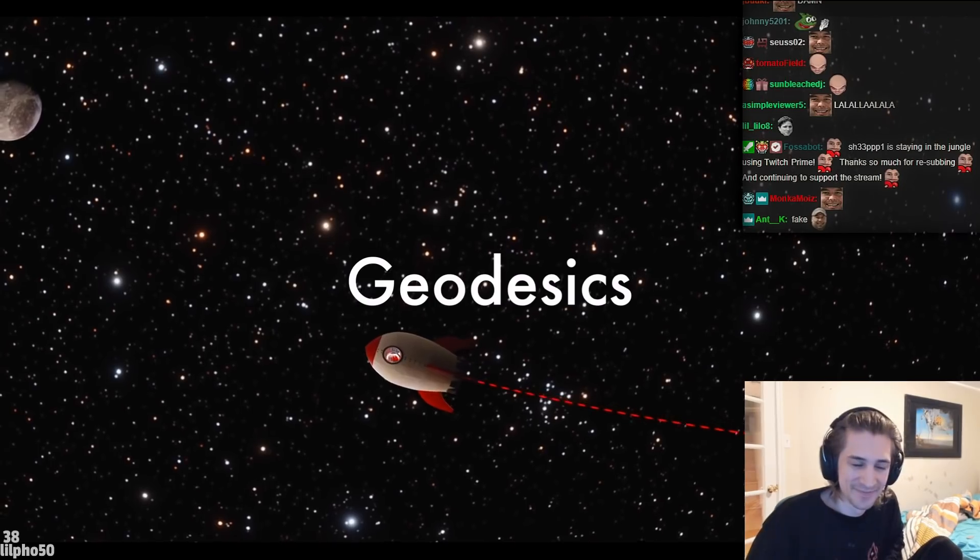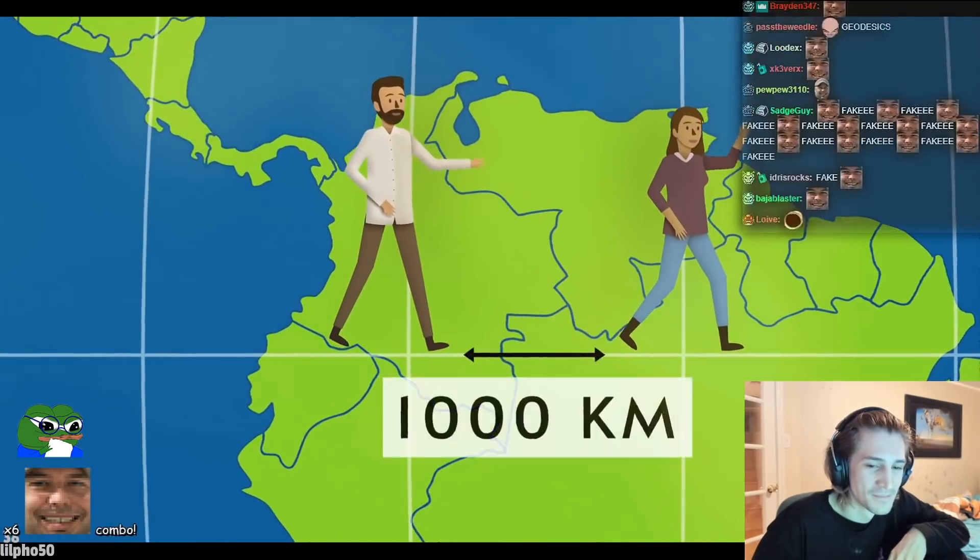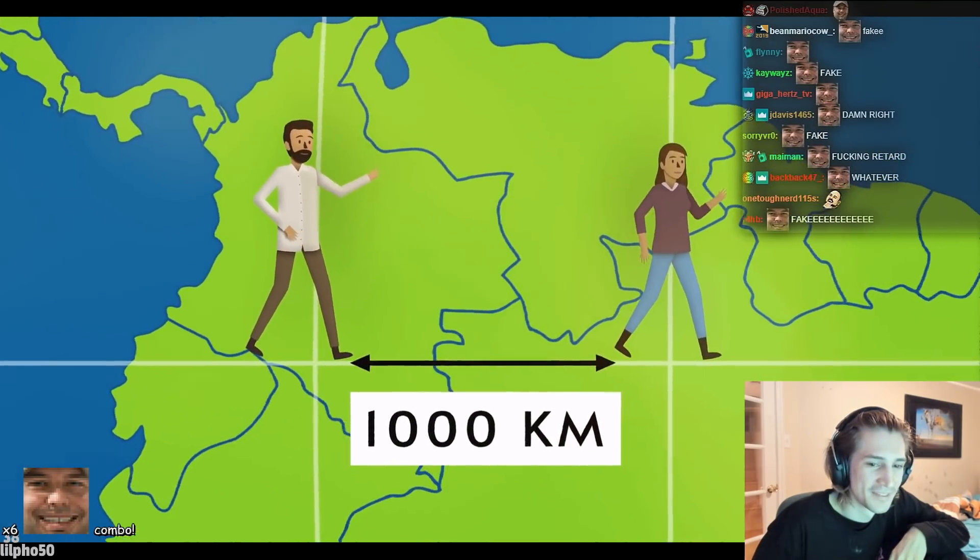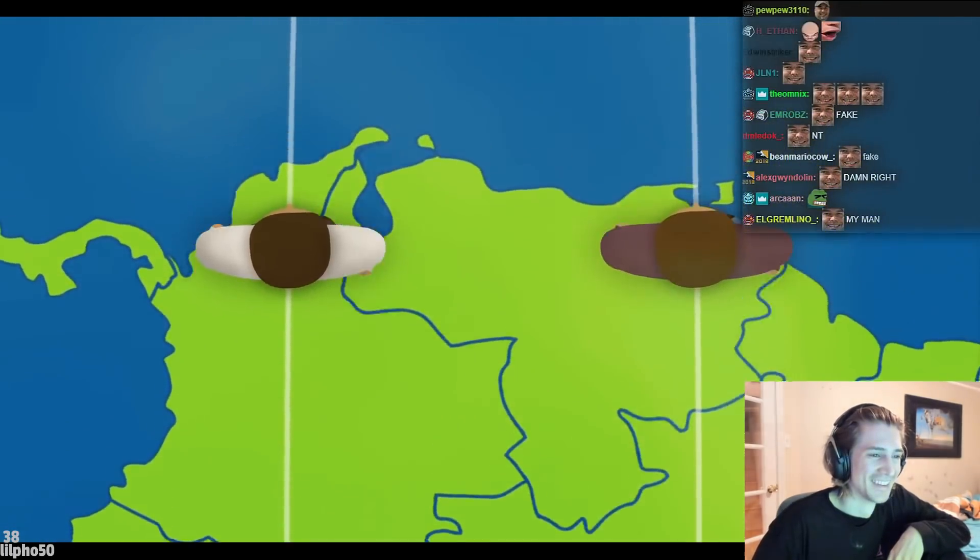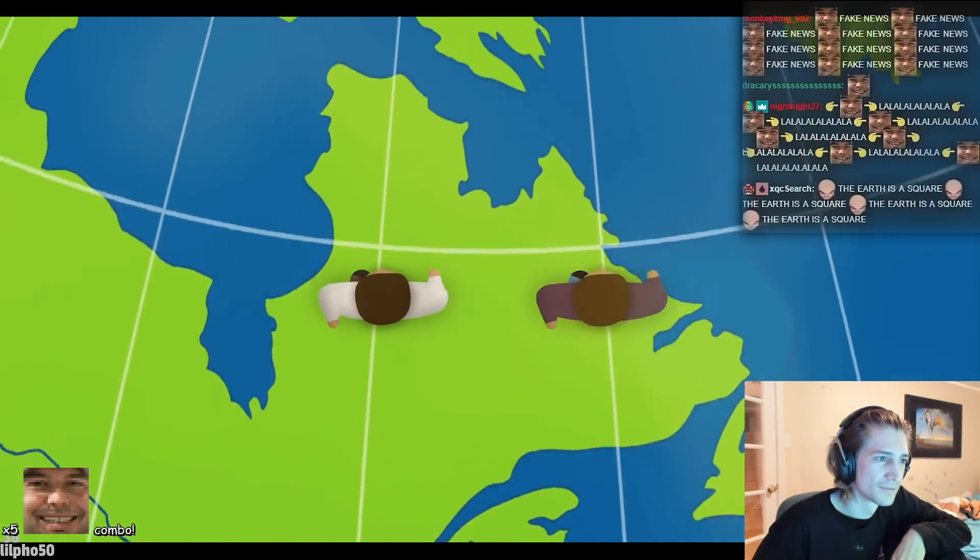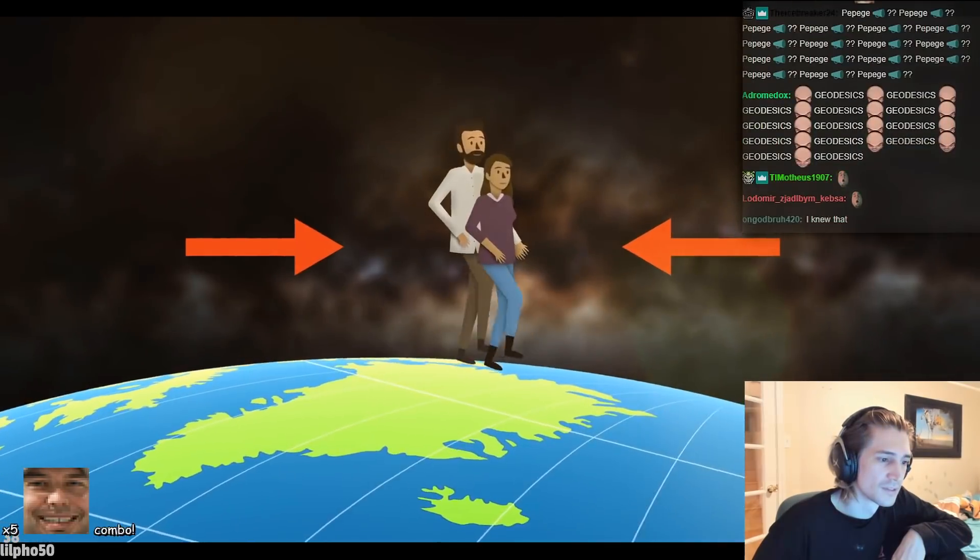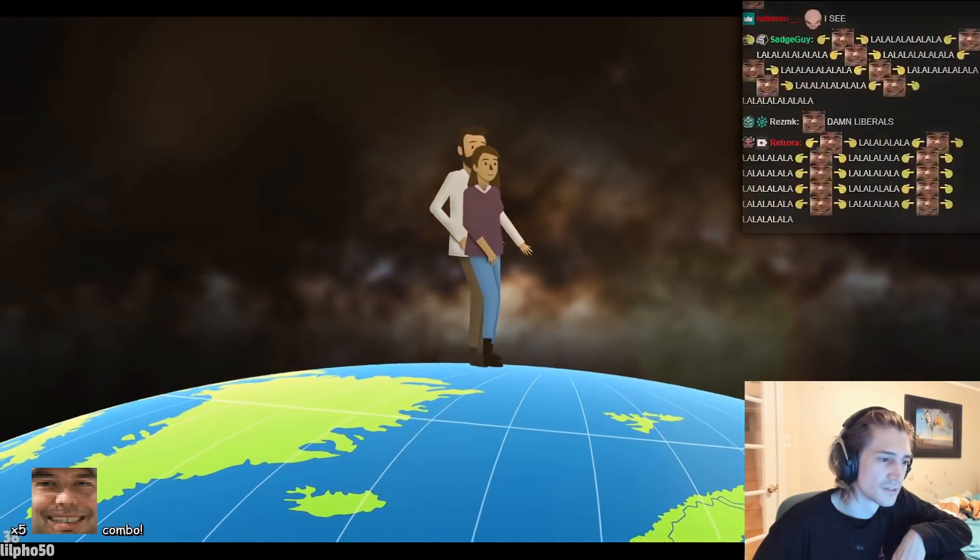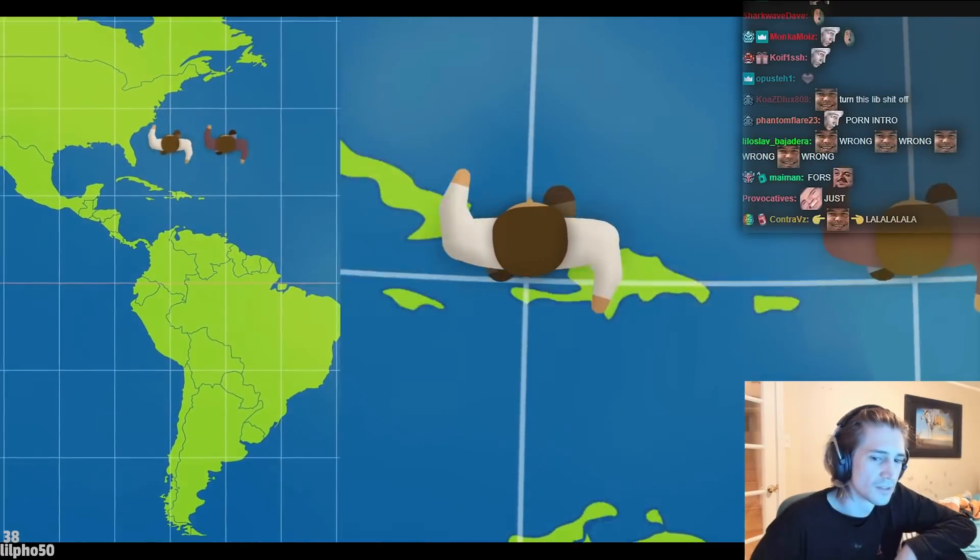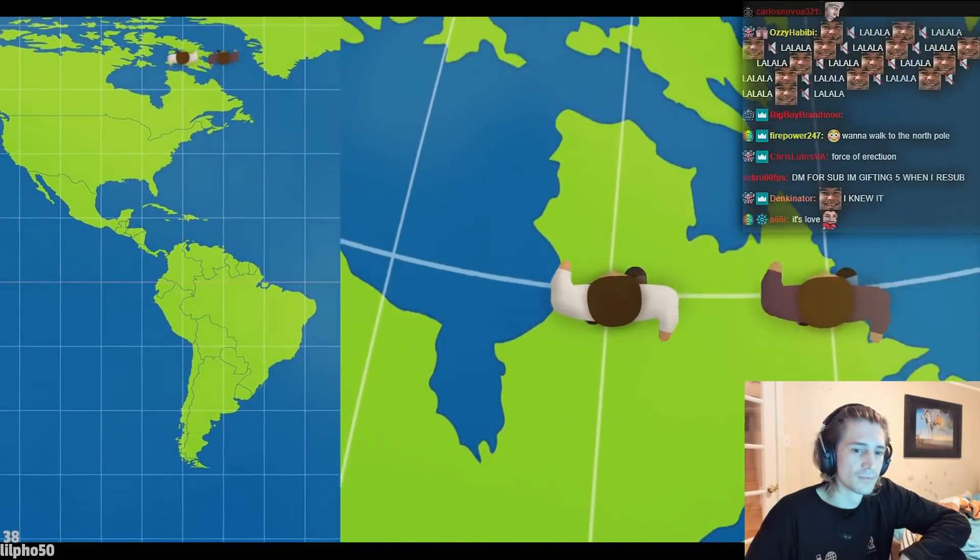Here's another analogy. Imagine you and a friend are standing a thousand kilometers apart on the equator. Now you both set off due north. Over time you will come closer together, ultimately bumping into each other at the north pole. It's as though there was a force pushing you together. But you didn't feel a force and your friend didn't feel a force. Gravity is just like that force. It doesn't actually exist. The real reason for you coming together was that you were both on straight paths, geodesics, on a curved surface.